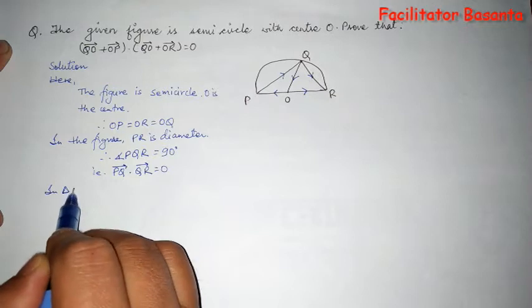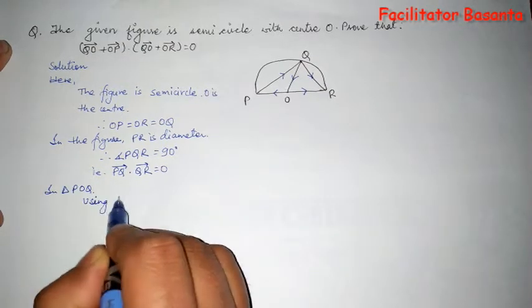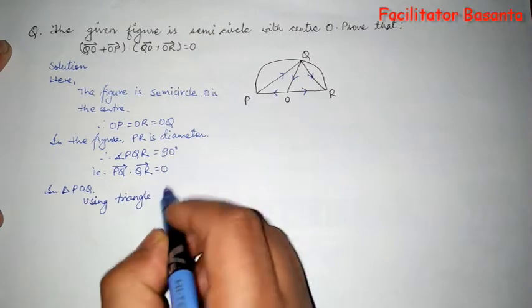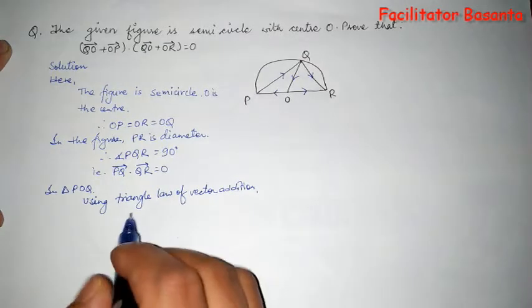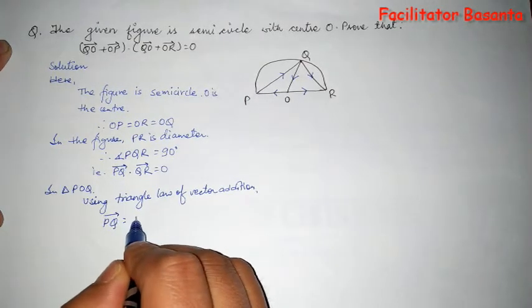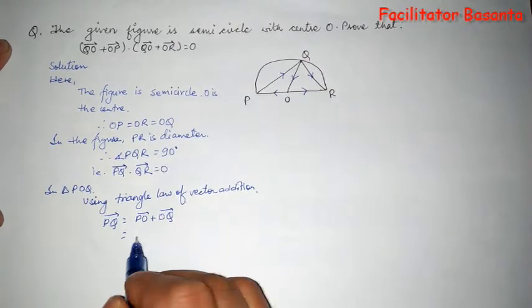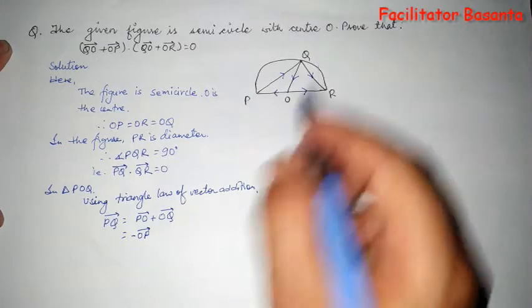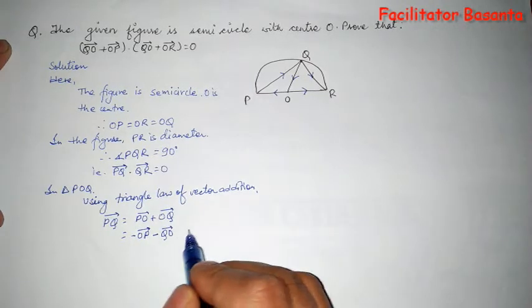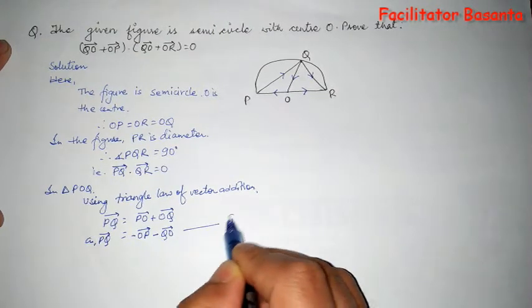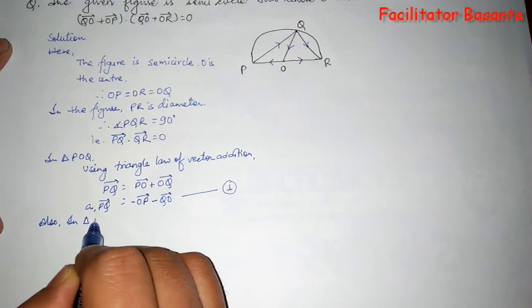In triangle POQ, using triangle law of vector addition, PQ vector equals PO vector plus OQ vector. But PO vector is negative of OP vector, and OQ is also negative of QO vector. So PQ vector equals negative OP minus QO. Let this be relation 1. Also in triangle OQR, same concept using triangle law of vector addition.